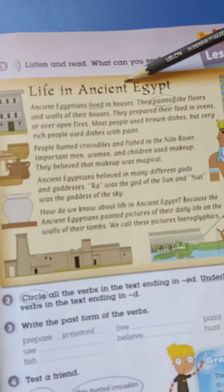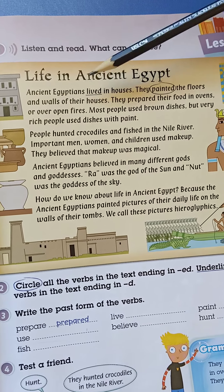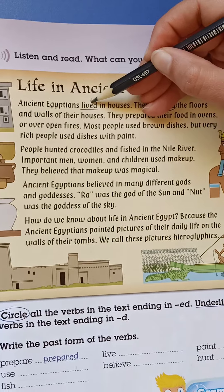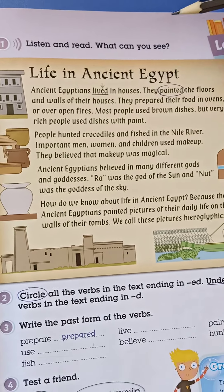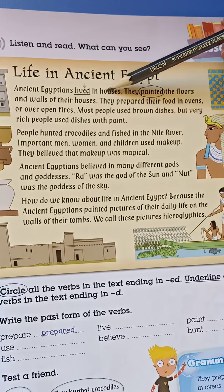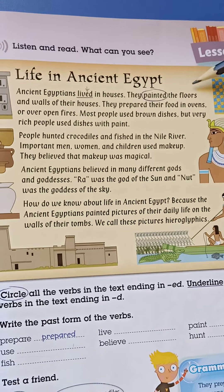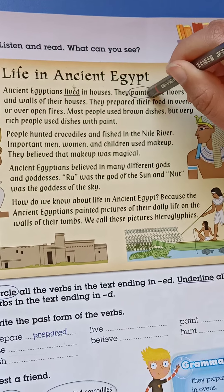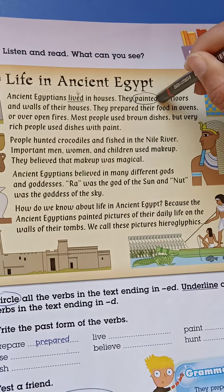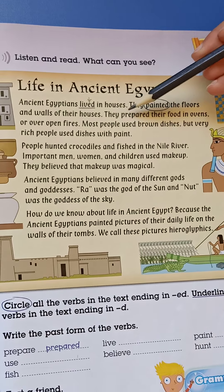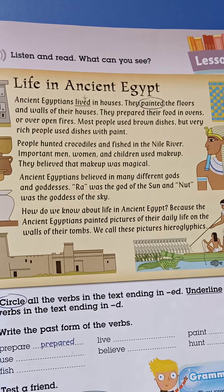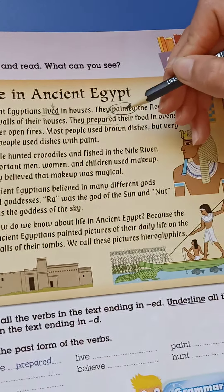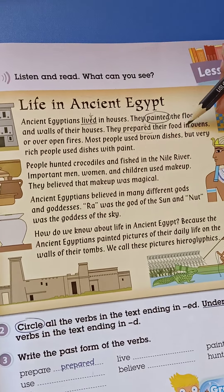Let's read: Life in Ancient Egypt. 'Ancient Egyptians lived in houses.' Here 'lived' is a regular verb ending with letter E, so we add just D. 'They painted the floors and the walls of their houses.' 'Painted' ends with a consonant letter T, so we add ED to make it past. 'They prepared their food in ovens.' The verb 'prepare' ends with letter E, so we add just D.